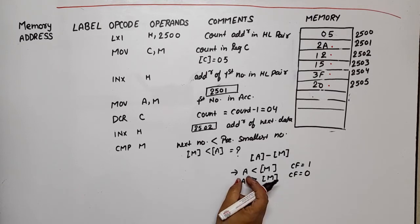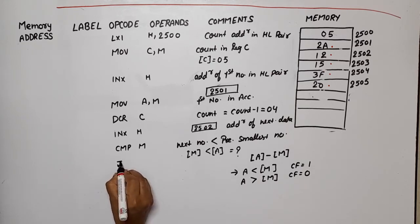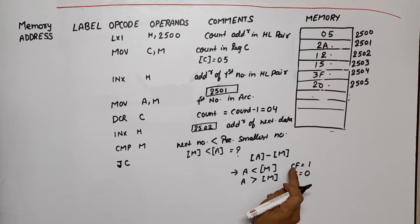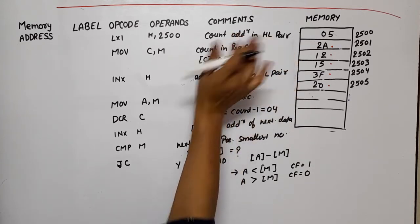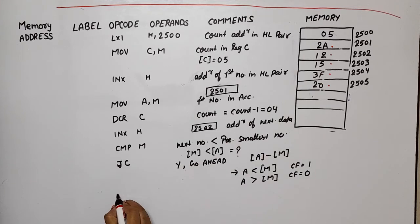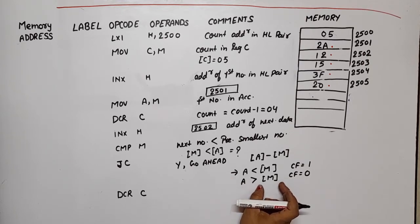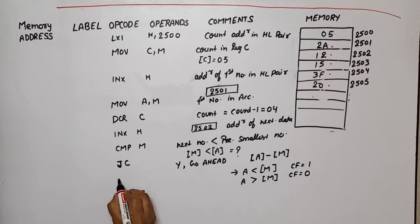First, we check when the accumulator has the smallest number. We use JC - if the condition is satisfied, meaning the carry flag is generated, then go ahead. When we go ahead, the comparison is done and the accumulator has the smallest number. If the accumulator does not have the smallest number, meaning the next number is smallest, then we move it into the accumulator using MOV A,M. This condition occurs when CF equals zero.